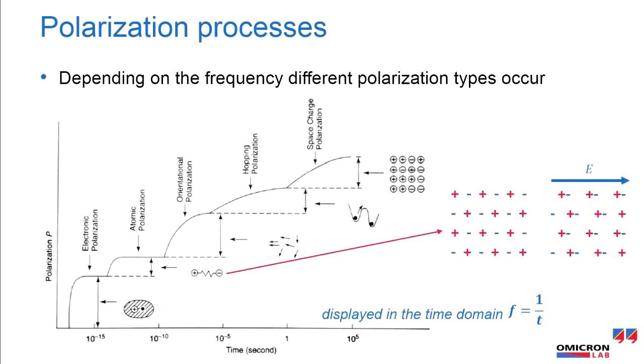Atomic or ionic polarization is caused by the relative displacement of positive and negative ions to each other. Electronic and atomic polarization have only a small influence to the real part of the relative permittivity. These polarization mechanisms are almost lossless.